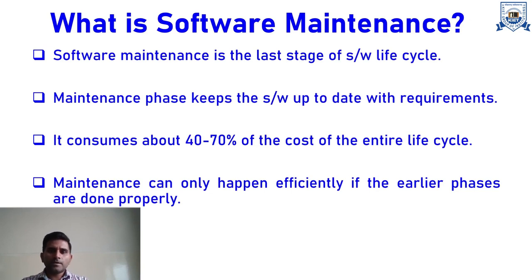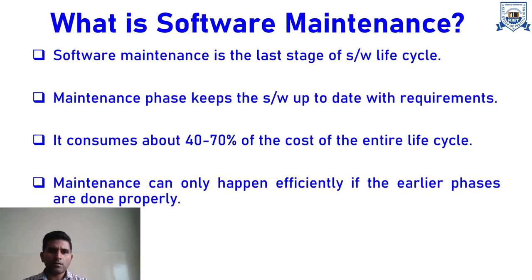After this software evolution discussion, we find that once software is developed, things change in the surrounding environment over a period of time. So you need to go for maintenance on a regular basis. From this slide onwards, let us understand a basic overview of software maintenance. Software maintenance is the last stage of the software development lifecycle model.